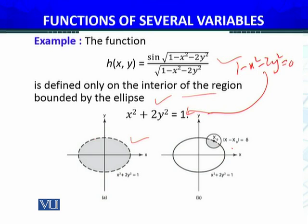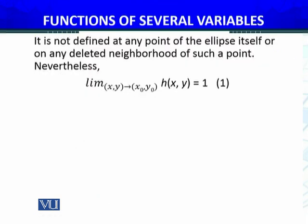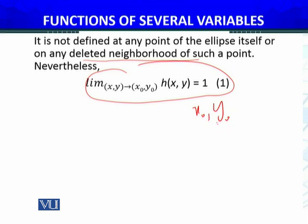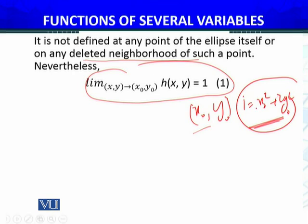If x₀ is a boundary point, then |x - x₀| = δ will be an open ball in R² about x₀. It is not defined at any point of the ellipse itself or on any deleted neighborhood of such a point. Nevertheless, limit, humne sabit karna hai ke is function ki limit jo hai whenever (x,y) approaches to (x₀,y₀), where (x₀,y₀) kya hai - boundary point hai ellipse ka. Iska matlab hai ellipse jo hai 1 = x₀² + 2y₀².